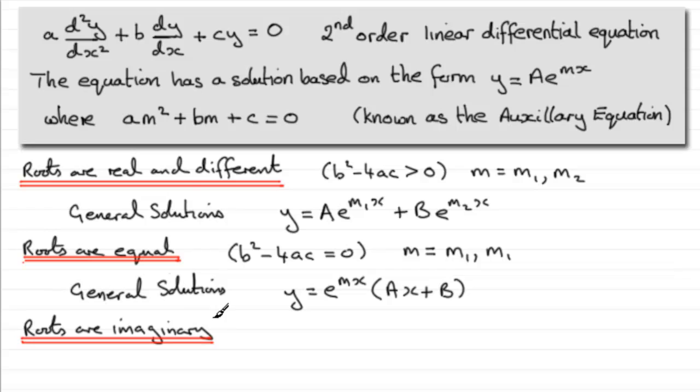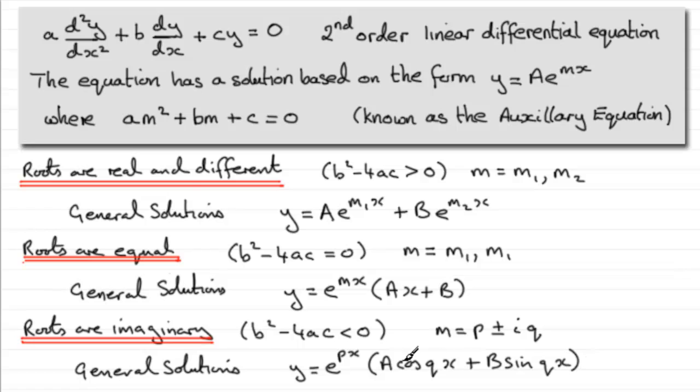And finally, we could have a situation where the roots are imaginary. And that happens when the discriminant b squared minus 4ac is a negative number, less than zero. And this leads to complex roots. Roots of the form m equals p plus or minus iq, where p and q are real numbers and i is the square root of negative 1. And when we get a situation like this, the general solutions of this type of equation turn out to be of the form y equals e to the power px, the real part of this complex number, all multiplied by a cos of qx plus b sine qx, where a and b are, again, arbitrary constants.